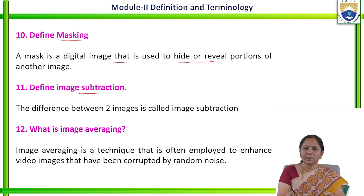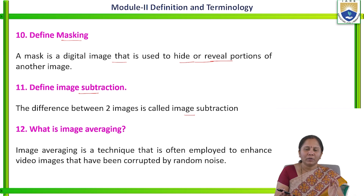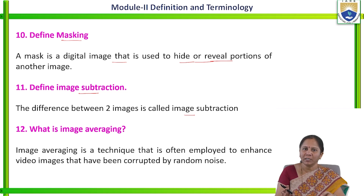Define image subtraction. The difference between the two images is called image subtraction. The subtraction will be performed considering the first pixel value of image 1 and first pixel value of image 2. After that, to perform the next operation: second pixel value of image 1 minus second pixel value of image 2.